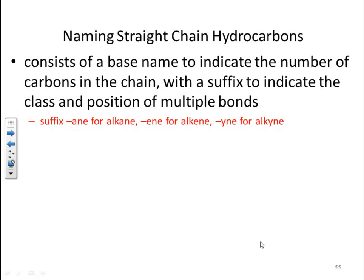Naming straight chain hydrocarbons consists of a base name to indicate the number of carbons in the chain, with a suffix to indicate the class and position of the multiple bonds. Suffix A-N-E for alkanes, E-N-E for alkenes, and Y-N-E for alkynes. This would be your single, double, and triple bond.